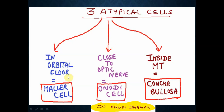Remember, the ethmoid bone is between two orbits. If by chance the ethmoid cells extend into the floor of the orbit, they are called Haller cells. If they grow very close to the optic nerve, the cell is called an Onodi cell. If they grow inside the middle turbinate, it is called concha bullosa. These three are variable cells. Haller cell is part of the anterior ethmoid air cell system; Onodi cell is part of the posterior ethmoid air cell system. Onodi cell will be very close to the sphenoid sinus, as the optic nerve is near the roof of the sphenoid sinus.